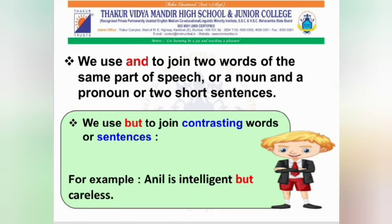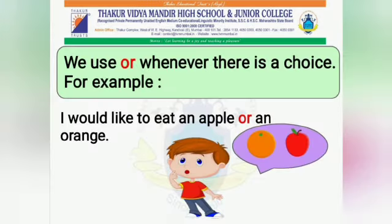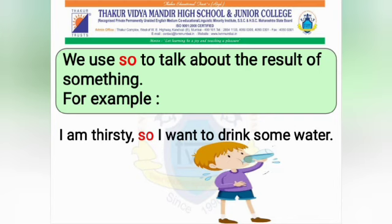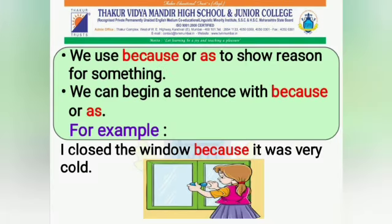We use 'but' to join contrasting words or sentences. For example: Anil is intelligent but careless. We use 'or' whenever there is a choice. For example: I would like to eat an apple or an orange. We use 'so' to talk about the result of something. For example: I am thirsty so I want to drink some water.